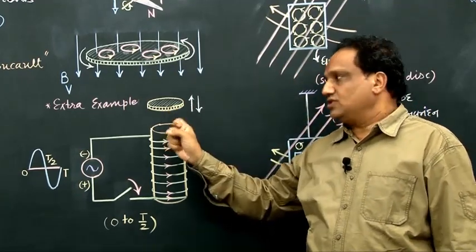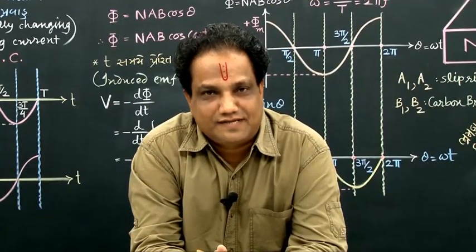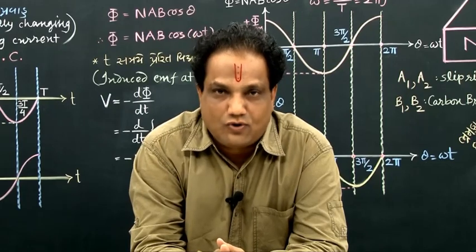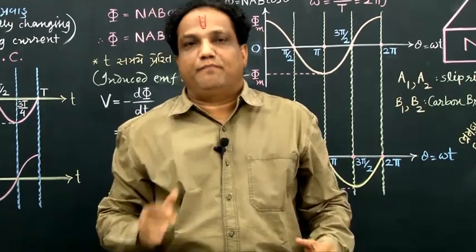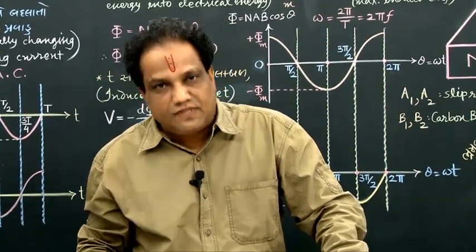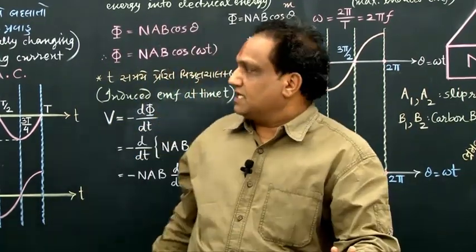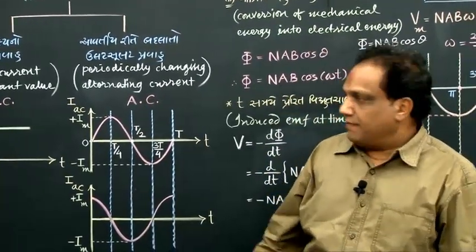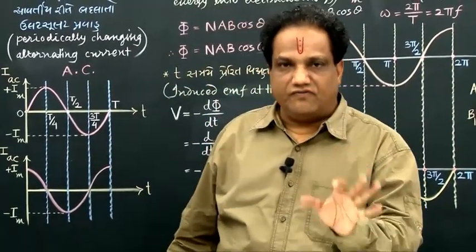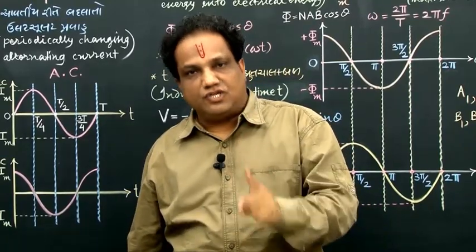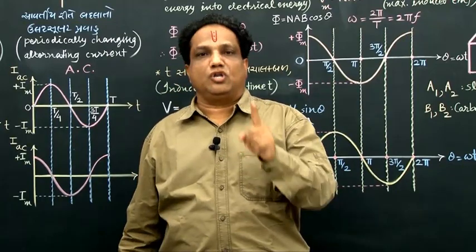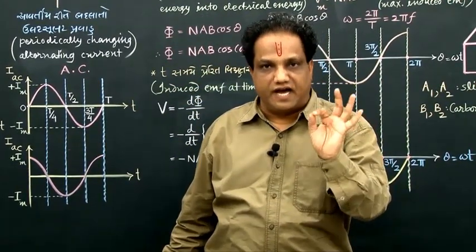The jumping disc is because of eddy currents produced in it. Now, before we go for understanding the principle, construction and working of the AC generator, let me tell you about two types of electric current. There are two types: one is DC and another is AC. DC means direct current — a current which continues to flow in the same direction. A current which does not change the direction of flow is called unidirectional current or direct current. Its magnitude may change, but direction of flow does not change.